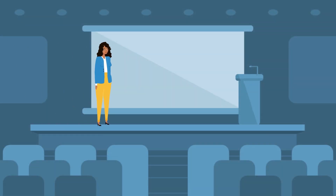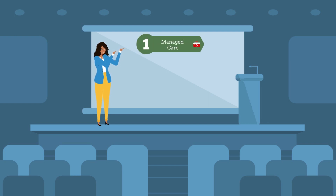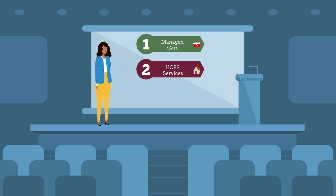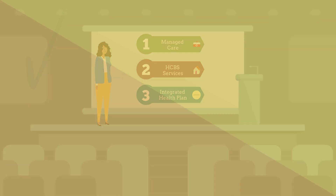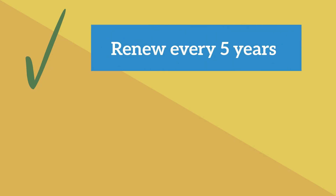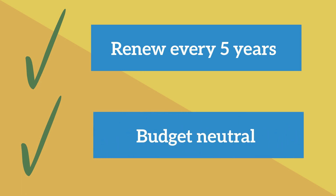For example, in Arizona, it's the waiver that allows the state to enroll members in managed care, to provide long-term services to people in their homes, and allow members to receive all of their health care needs — physical and behavioral — from their health care plan. However, these changes must be renewed every five years and must be budget-neutral for the federal government.